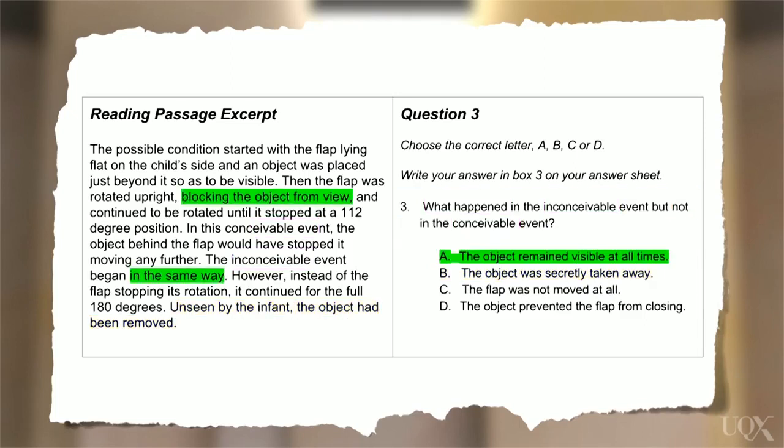Now if you have some time, it's a good idea at this point to quickly check the other options and make sure that they're wrong. For example, if we look at option A, it says that the object remained visible at all times. But if we look at the text, it says that at one point, the flap was blocking the object from view, in both the conceivable and inconceivable events.